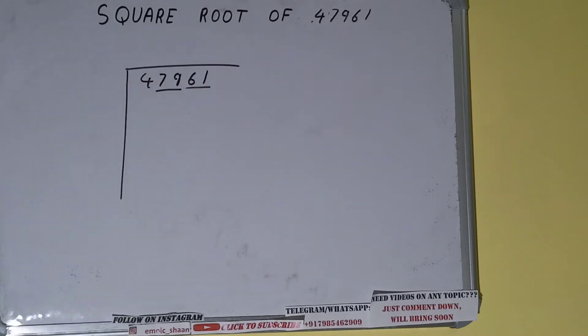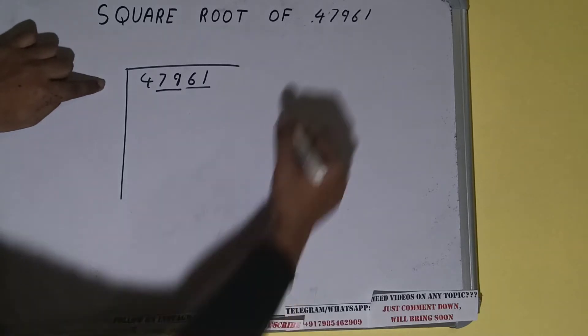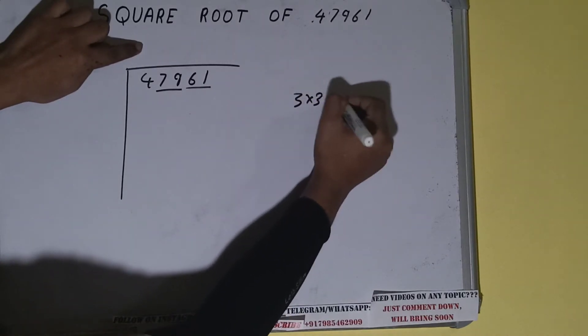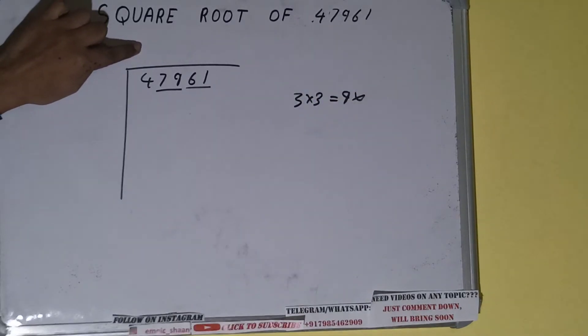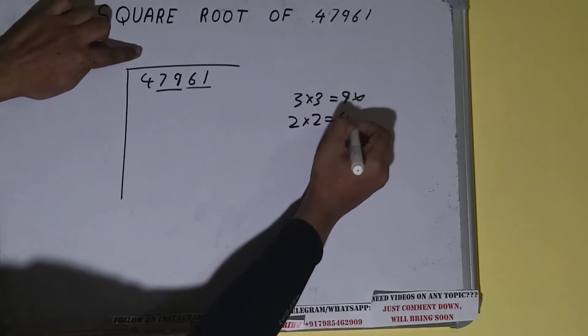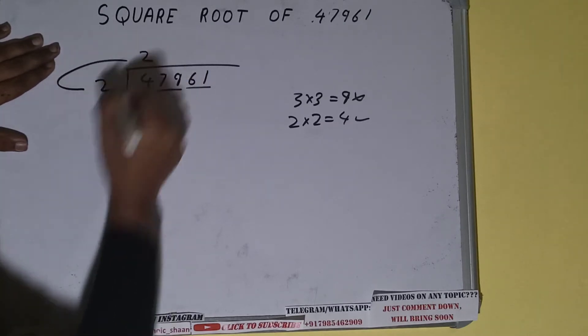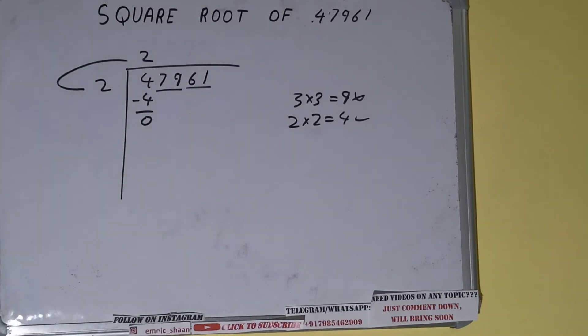The rule is whatever number we write here, we have to write here also. If we write 3 here and 3 here, we'll get 9, which is greater than 4, so we cannot take it. If we write 2 here and 2 here, we'll get 4, which is good to take. So 2 times 2 is 4, subtract it and zero will be left. We did 2 into 2, so add both: 2 plus 2 is 4. Write it here and keep a digit extra.